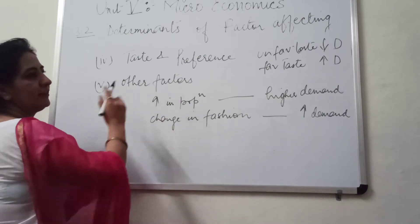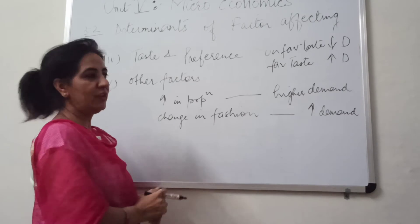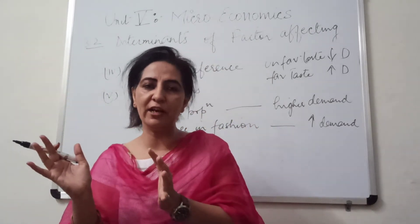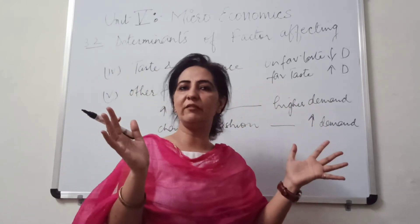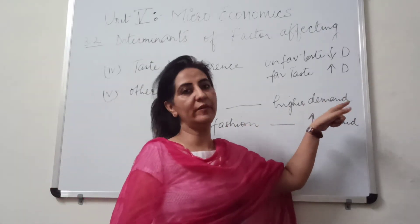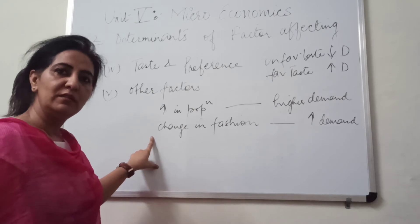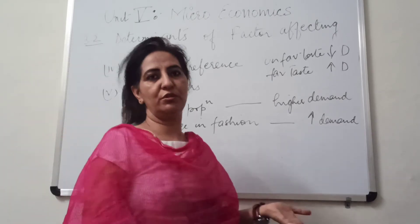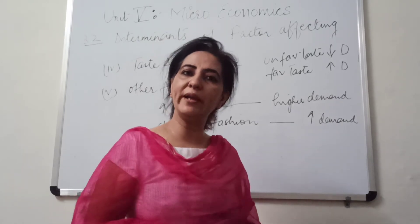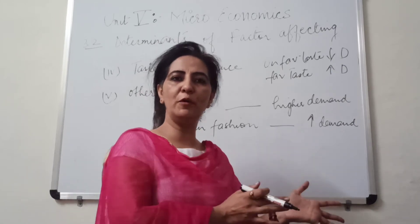The fifth factor is population. If population increases, demand also increases — more population means higher demand. Less population means less demand. Population can decrease due to a pandemic, epidemic, earthquake, or any other reason. So more population leads to more demand, and less population leads to less demand.